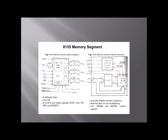Here we have shown the 8155 memory section block diagram. It has 8 address lines, 1 chip enable, and 5 control and status signals. It includes 256 x 8 memory locations, an internal latch for demultiplexing, chip enable, and control signals.